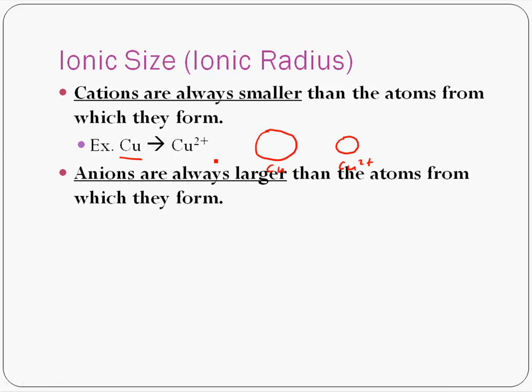And the opposite is true for when you form anions. So in the case of chlorine, when you add an electron to chlorine, so if that's chlorine there, when you add an electron, chlorine is going to tend to get bigger.